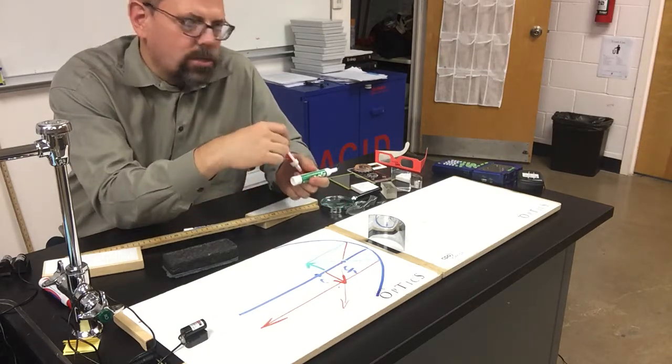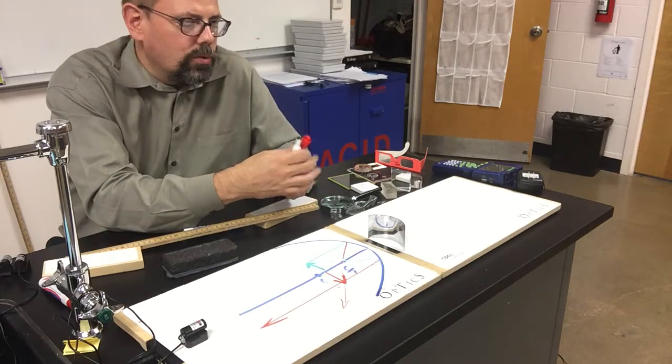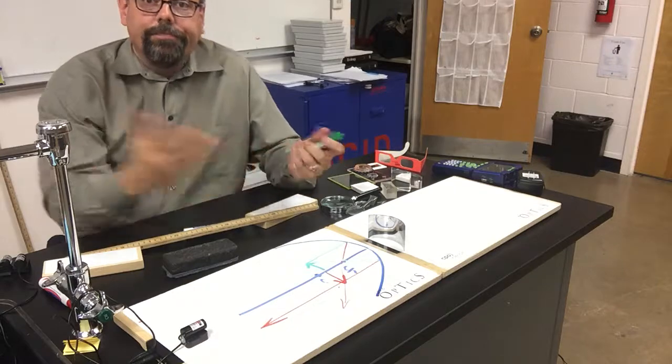So those are three different ways you can draw these images to find out where the image would be for these objects, for that kind of mirrors. Thanks.